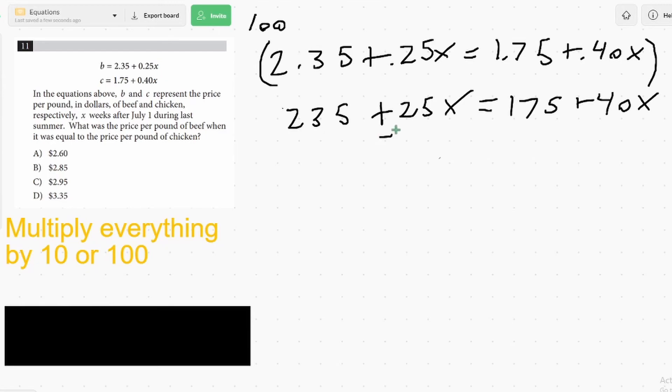So I'd subtract 25X from both sides. And we would get 15X. At the same time, I'm going to subtract 175 from both sides. And we'll get 15X equals 60. And we can divide by 15. And we get X equals 4.